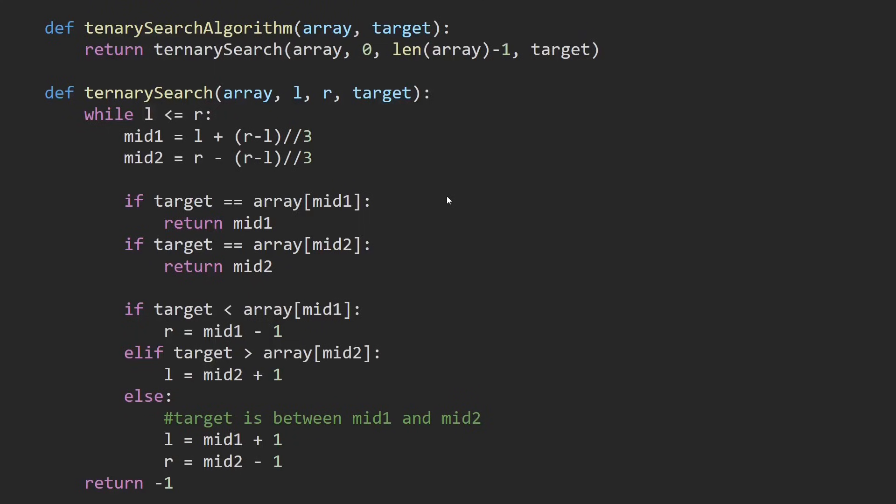If we find our target, we just return the index, which means that we found it. If our target is smaller than the number at m1, then it's in the first group. We have to move r to the first group and we repeat the process. If it's in the third group, we move l to the third group and we repeat the process. But if it's in the second group, then we move l and r to their places accordingly.